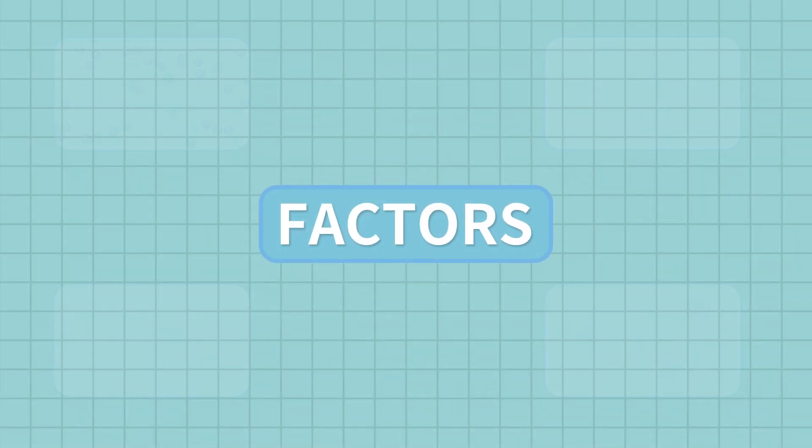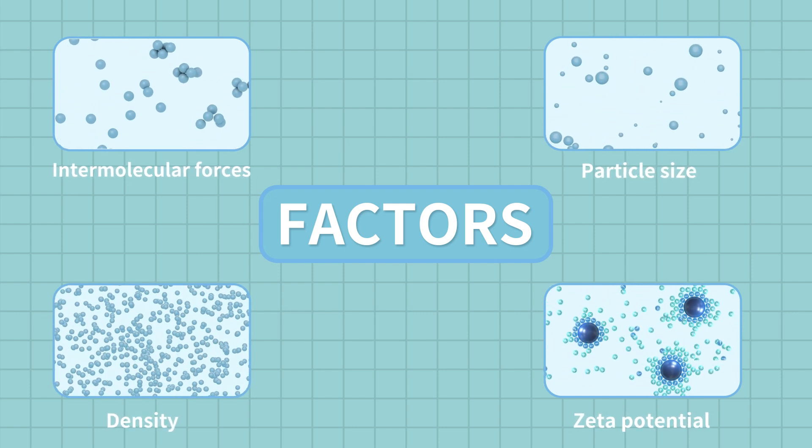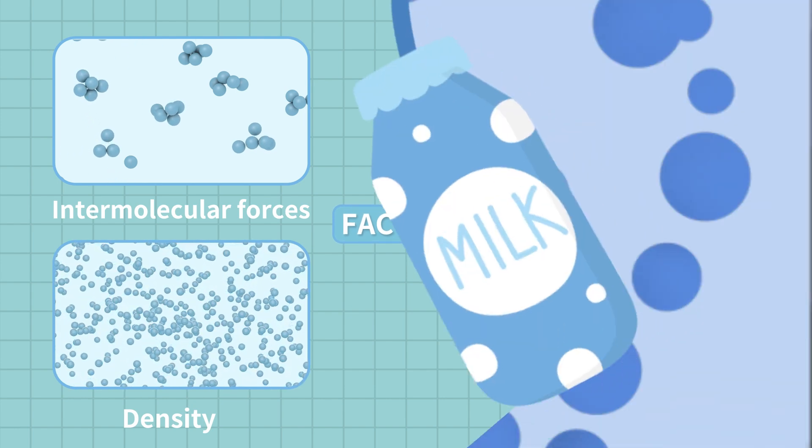Factors such as intermolecular force, particle size, density and zeta potential significantly impact dispersion stability. For instance, fat globules in milk products can lead to creaming.